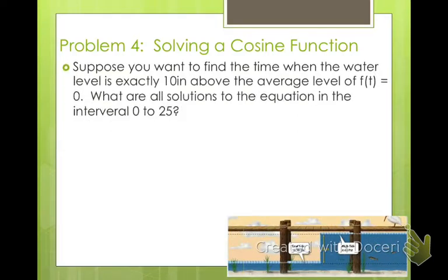For solving a cosine function, suppose that you want to find the time when the water level is exactly 10 inches above the average level of f of t equals 0. What are all solutions to the equation of the interval from 0 to 25? So from 0 to 25 hours, so that's within like a 24-hour period, how many times is the water level 10 inches above the average level, so our midline.